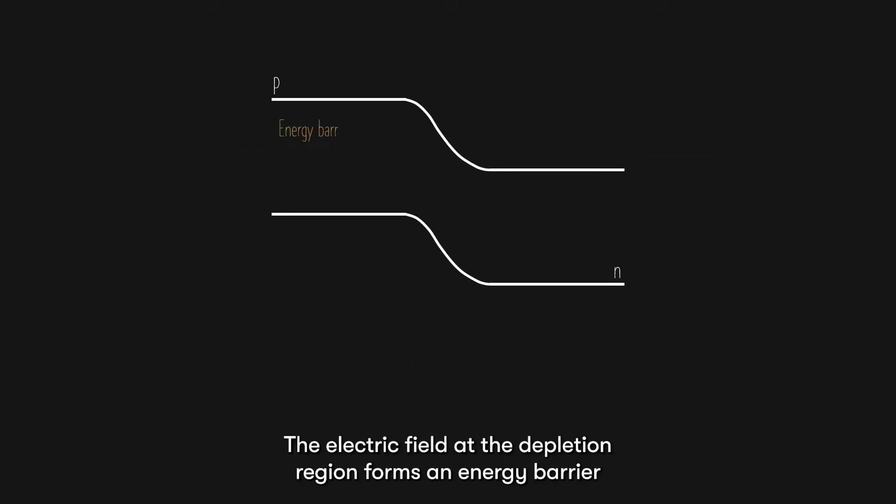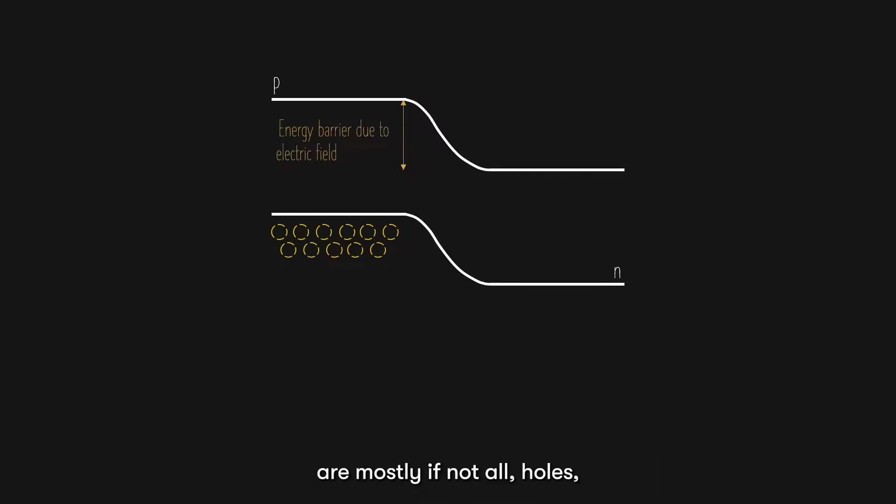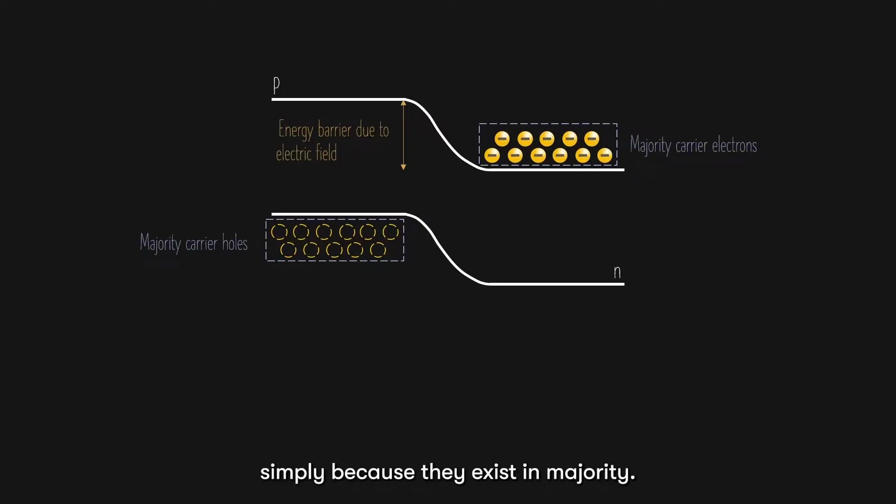Here's what happens. The electric field at the depletion region forms an energy barrier that prevents further diffusion of holes and electrons. The higher the electric field, the higher the energy barrier. Now, we know that the free carriers at the P side are mostly, if not all, holes, while the free carriers at the N side are electrons. These are called majority carriers, simply because they exist in majority.